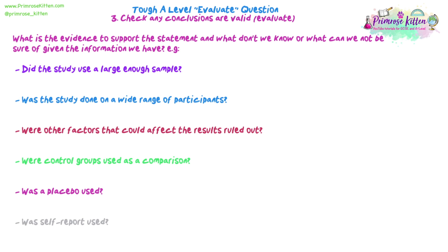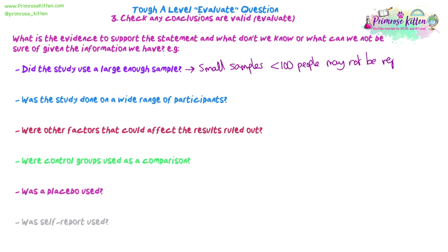Now we need to check that any conclusions are valid by looking at how the study was done — how the clinical trial or data was collected. Did the study use a large enough sample? Realistically, we're looking at more than 100 people for quite a large sample. If it's less than 100 people in a clinical trial on humans or even mice, it's not going to be representative of a whole population — too few subjects to confidently apply results to a large audience.